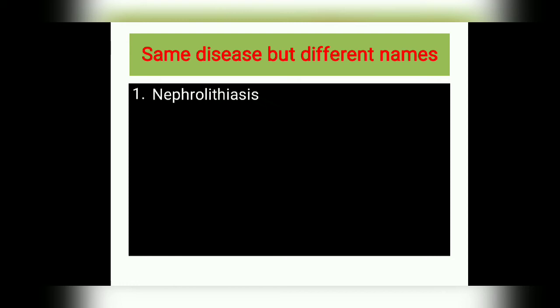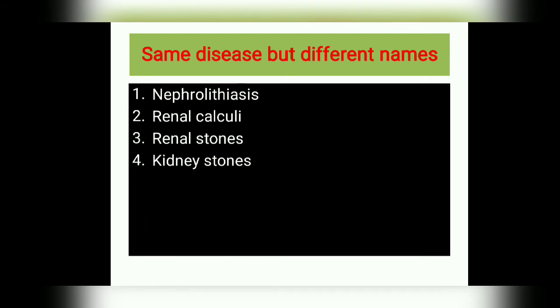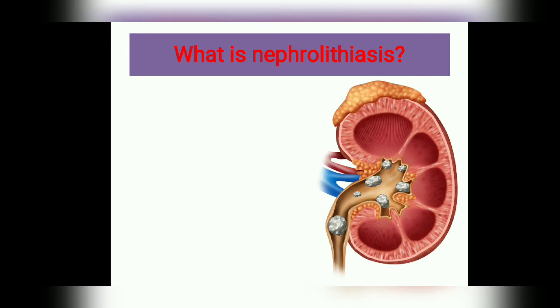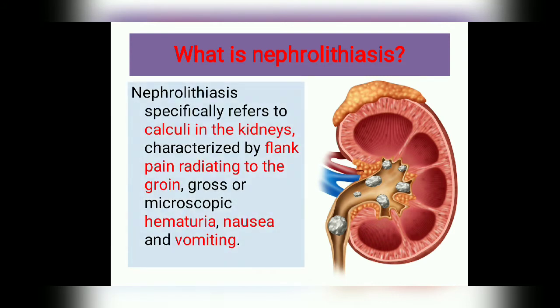Nephrolithiasis, renal calculi, renal stones, and kidney stones are all different names for the same disease. The word 'nephro' means kidneys and 'lithiasis' means stone. So if there are stones in the kidneys, that condition is called Nephrolithiasis. You can see in the image that stones are visible in the kidney. Nephrolithiasis specifically refers to calculi in the kidneys.